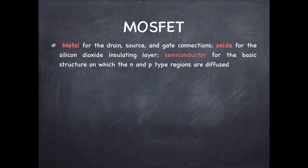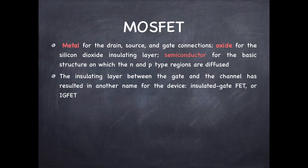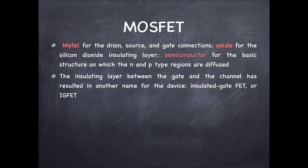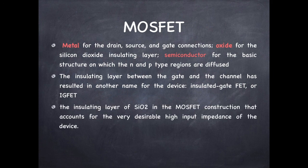And the term semiconductor is used for the basic structure on which the N and P type regions are diffused. Thereby we get this name metal oxide semiconductor field effect transistor. The insulating layer between the gate and the channel has resulted in another name for the device that is called insulated gate FET or IGFET.